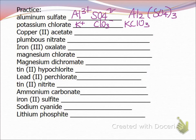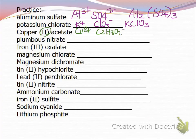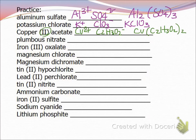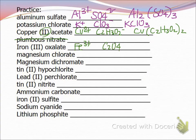Copper(II) acetate: copper(II) is +2 and acetate is C₂H₃O₂⁻ with a −1 charge. Since copper is +2 and acetate is −1, I need two acetates: Cu(C₂H₃O₂)₂. Iron(III) oxalate: iron(III) is Fe³⁺ and oxalate is C₂O₄²⁻. The common multiple of three and two is six, so I need two iron and three oxalates: Fe₂(C₂O₄)₃.